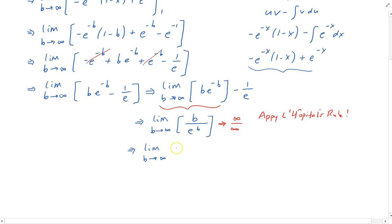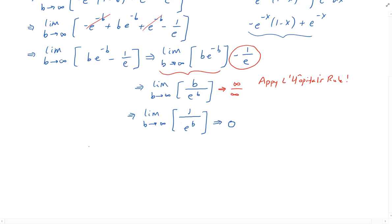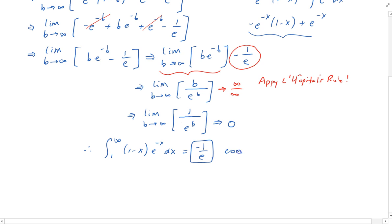Applying L'Hôpital's rule, we take the derivative of the top, which is just 1, and the derivative of the bottom with respect to b, which is e to the b. So we have 1 over something getting large — 1 over infinity — which goes to 0. Therefore, the overall limit gives us minus 1 over e, because don't forget that constant term. So the integral from 1 to infinity of (1 minus x) times e to the negative x equals negative 1 over e, and therefore this integral converges.